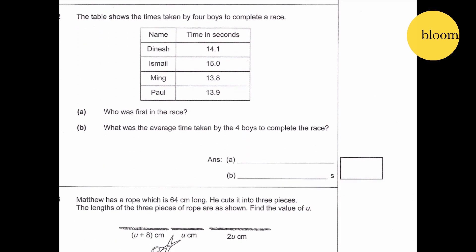Question number 2. The table shows the times taken by 4 boys to complete a race. Part A: Who was first in the race? That will be the shortest time, 13.8. Ming.